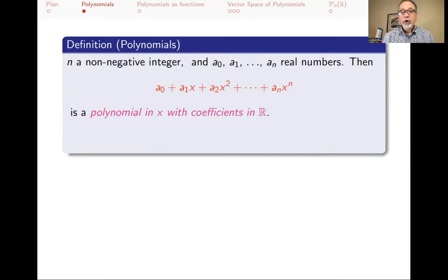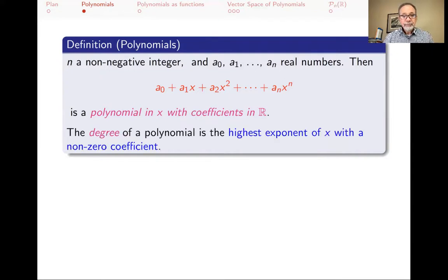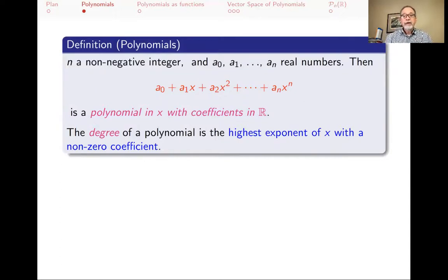The blackboard ℝ means real numbers, so the coefficients we pick are real numbers. The coefficients could be other things, but for us most of the time they are just real numbers. The degree of a polynomial — you might say the degree is n — but that wouldn't be quite right, because as I've defined it, aₙ, the coefficient of xⁿ, could be 0. So the degree of a polynomial is the highest exponent of x that has a non-zero coefficient.